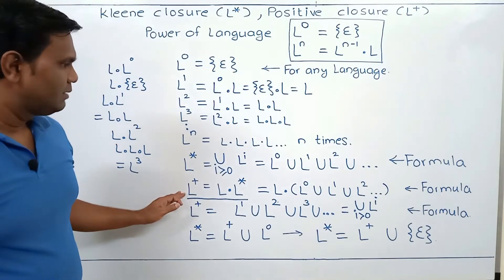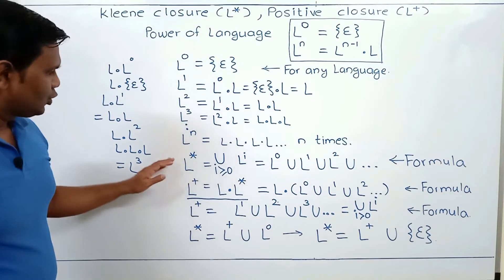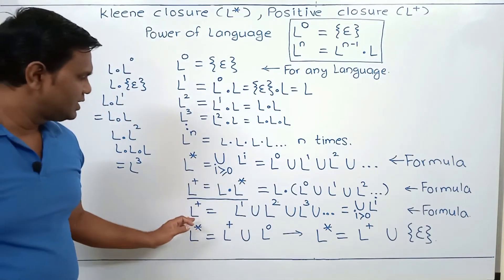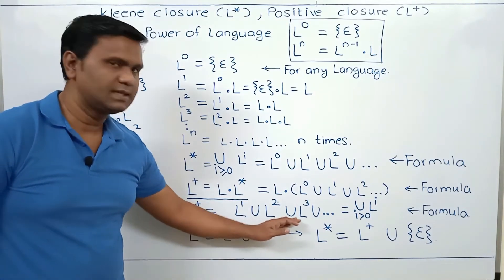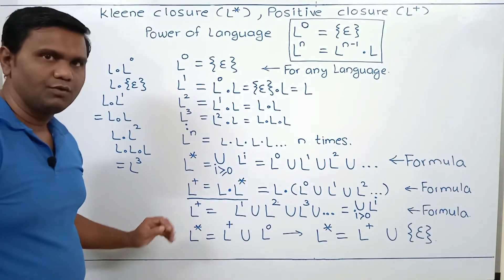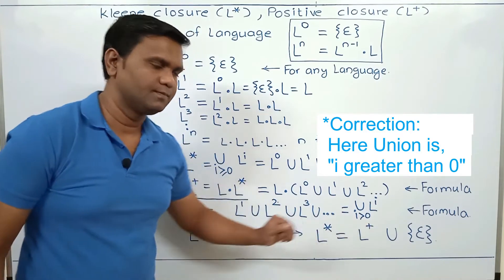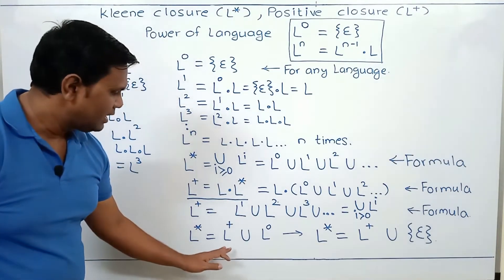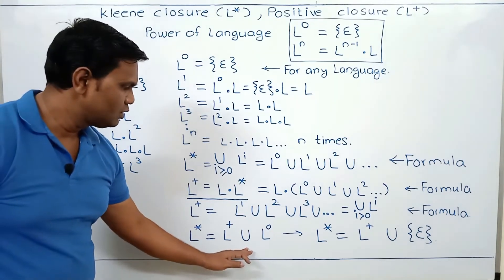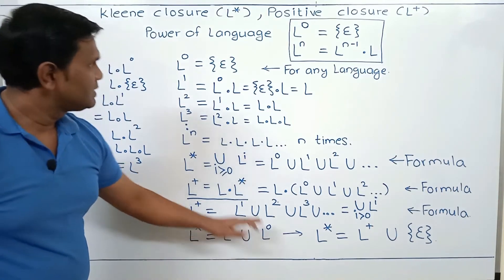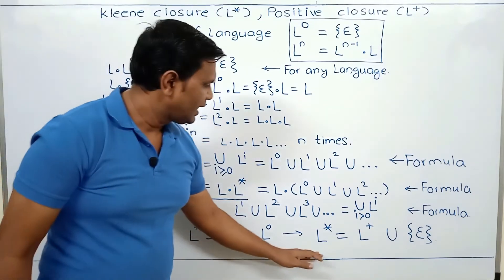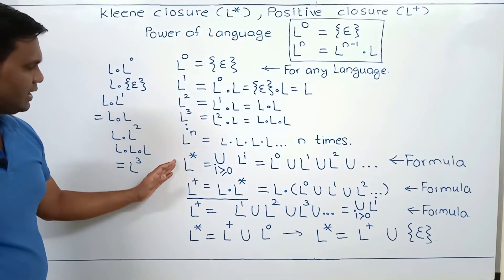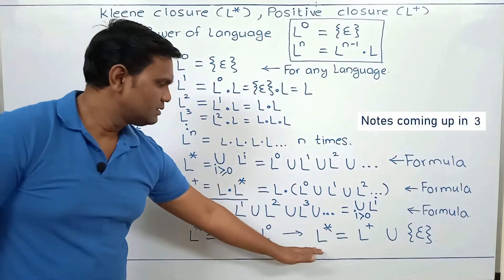You need to remember both formulas for L plus. In L star, the union starts with L power 0, L power 1, L power 2, L power 3 and so on. The important thing is that in L plus we do not consider L power 0; the union is for i greater than or equal to 1. So L star equals L plus union L power 0. Since L plus contains L power 1, L power 2, L power 3 and so on, making union with L power 0, which is epsilon, we get L star equal to L plus union epsilon.